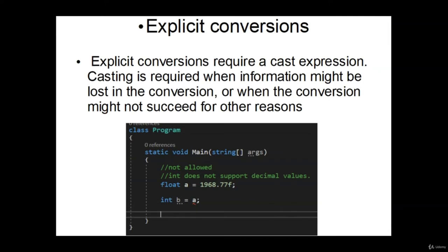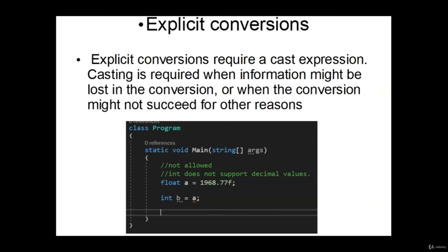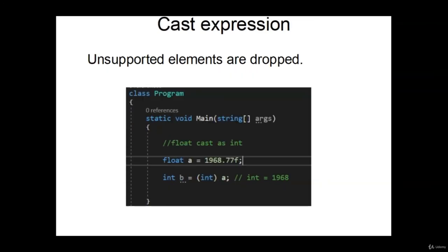Explicit conversions require a casting expression to ensure you understand the potential data loss. For example, we have float a = 1968.7 and we try to cast it into int b — we get an error because int only supports whole numbers and everything at the decimal would be lost. If we didn't care about the data loss, we'd use a casting expression: int b = (int)a. Instead of 1968.77, we only get the whole number part, 1968.